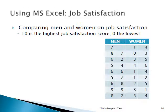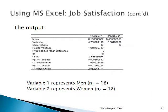Here's another problem using Excel. A company wants to know whether men and women have the same job satisfaction scores on a scale from 0 to 10, where 0 means very unhappy and 10 means highest job satisfaction. There were 18 men and 18 women. Looking at the Excel output — variable 1 is the men and variable 2 is the women — the mean for men is 6.1667 and the average job satisfaction for women is 3.5556.